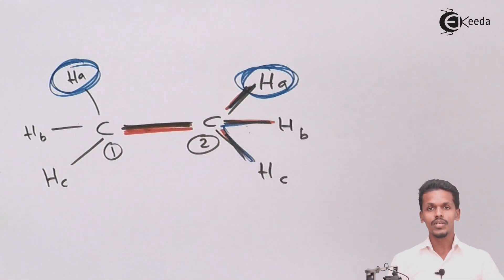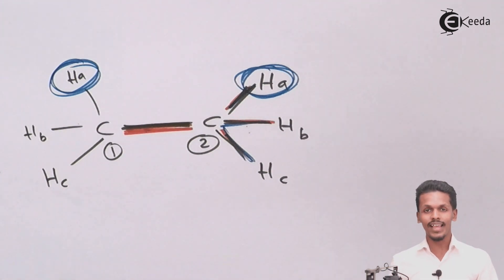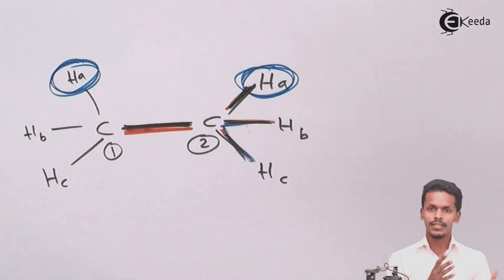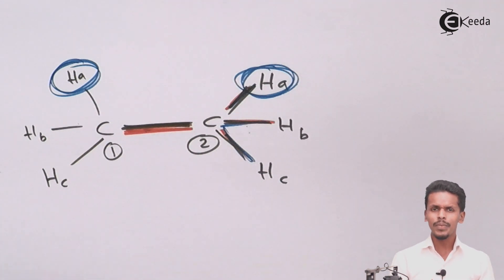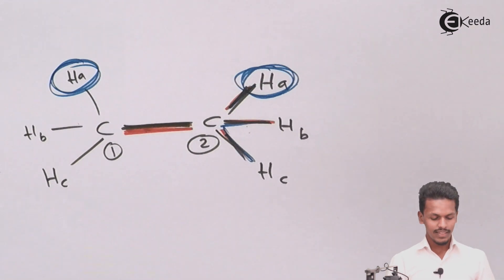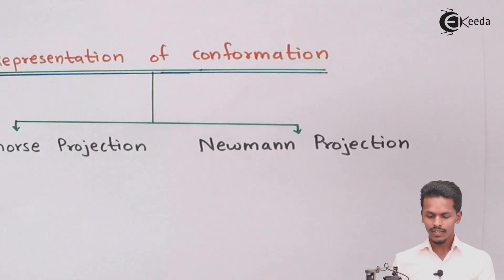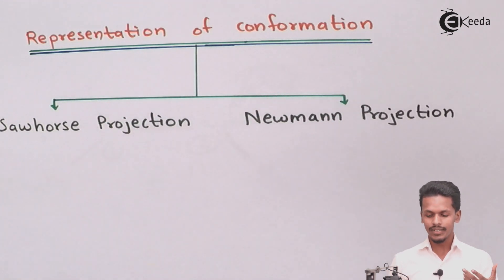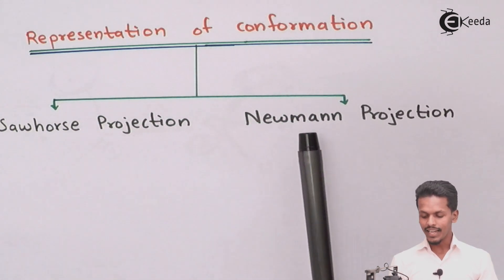It is very important to understand how to represent conformations in a 2D diagram, because that lets us understand whether a conformation is eclipsed or staggered, and also allows us to determine the stability of the molecule. The two methods to represent the conformation of ethane are: sawhorse projection and Newman's projection.